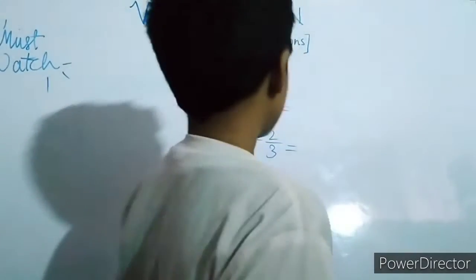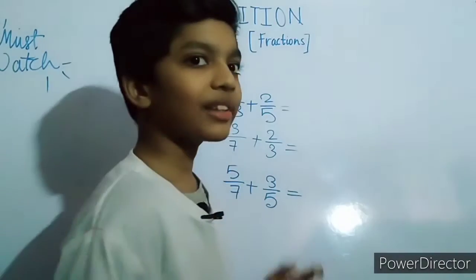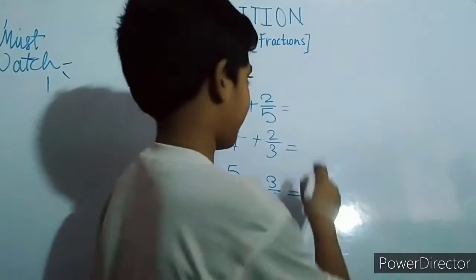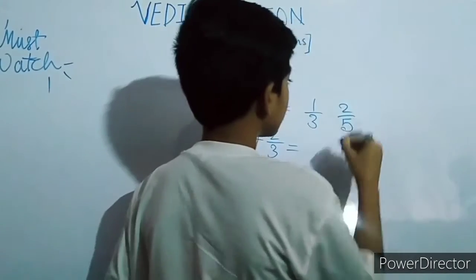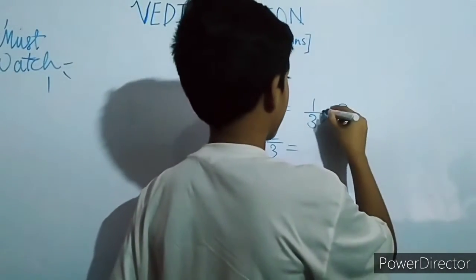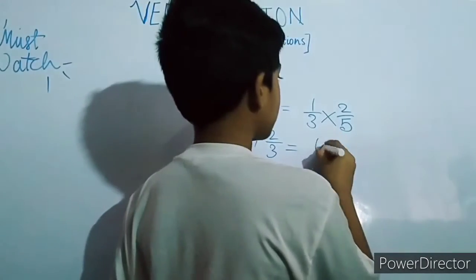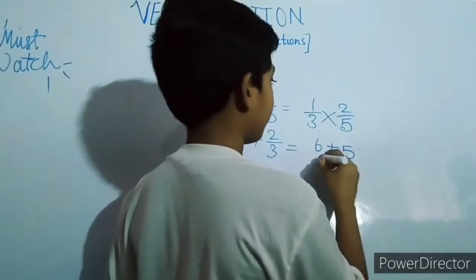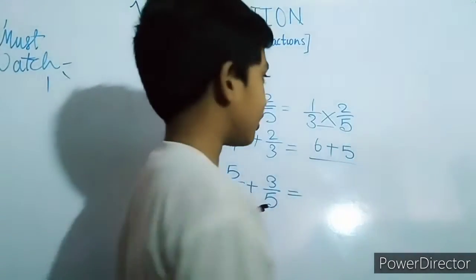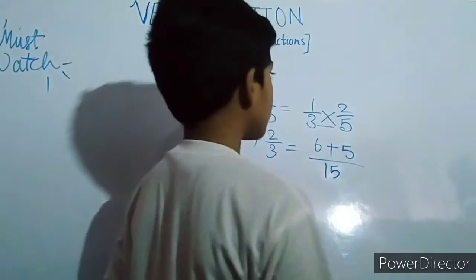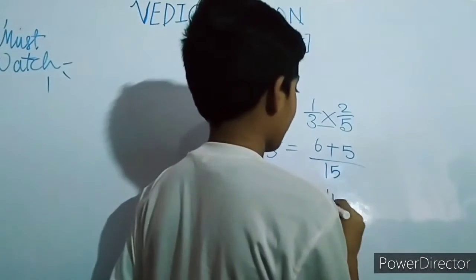Type number one: the denominator HCF is one. We have three examples. Let's solve them. One by three plus two by five — so first what you do is cross multiply. Three into two is six, plus five into one which is five, and for the denominator multiply three into five which is fifteen.